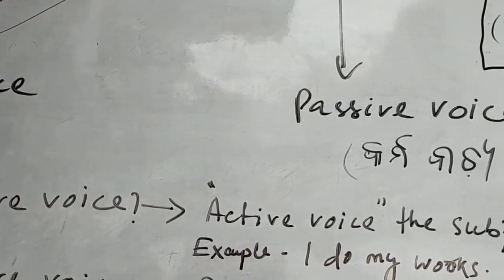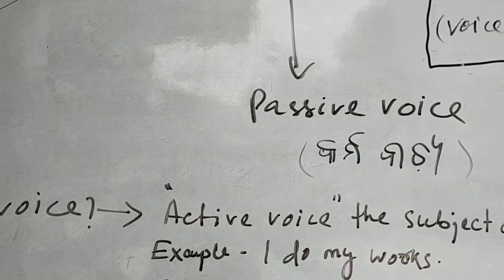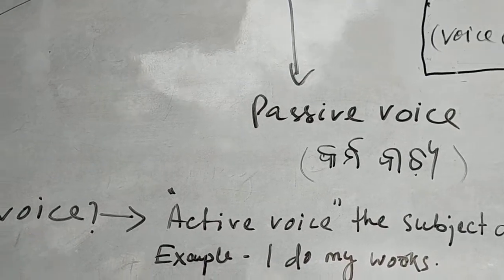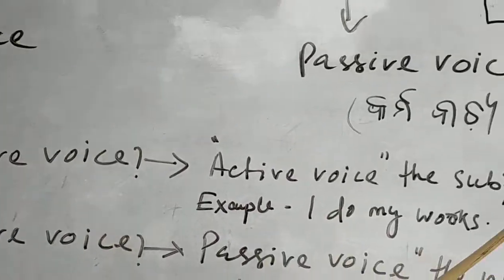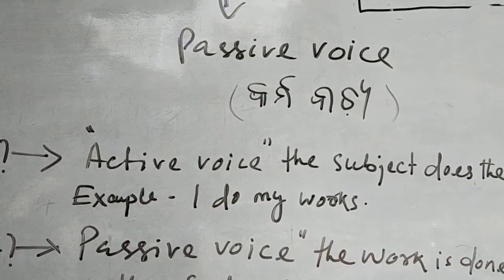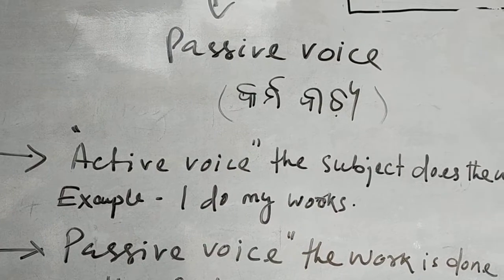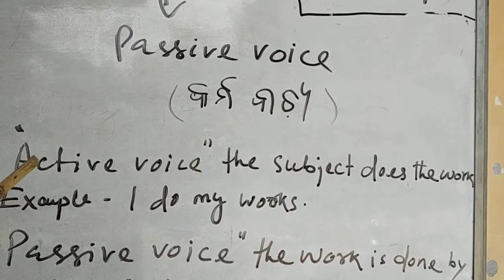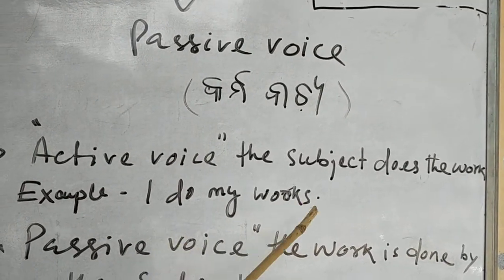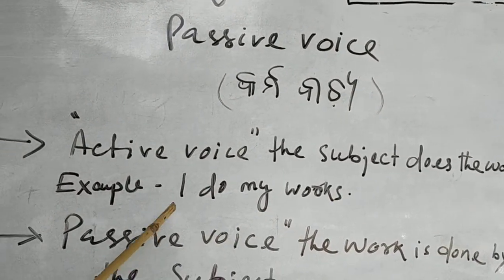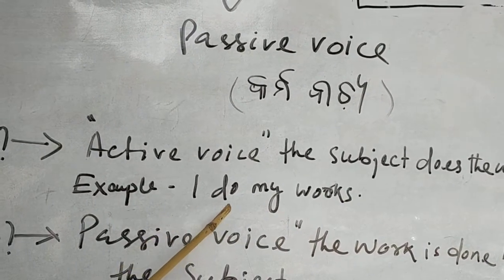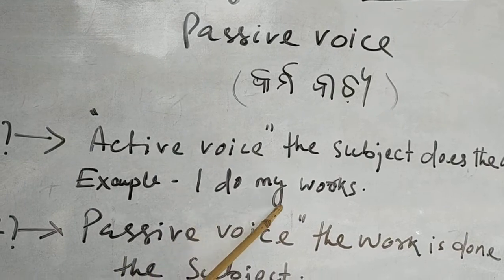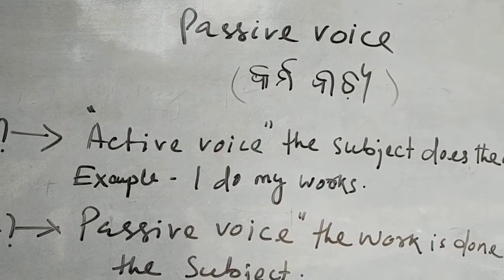And what is active voice? In active voice, the subject does the work — that is active voice. For example, 'I do my work.' Here 'I' is the subject, 'do' is the verb, and 'my works' is the object.